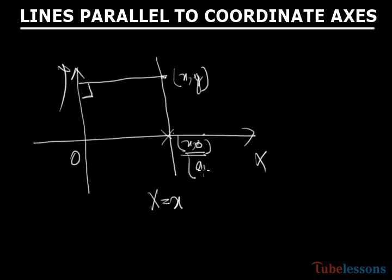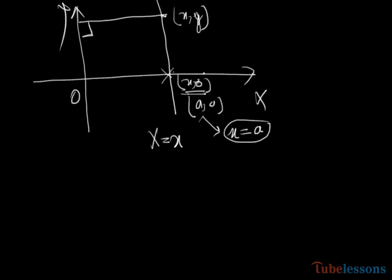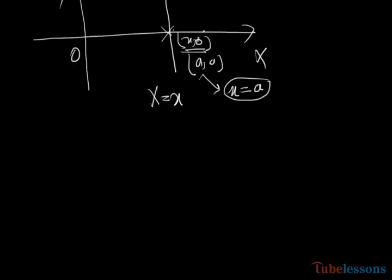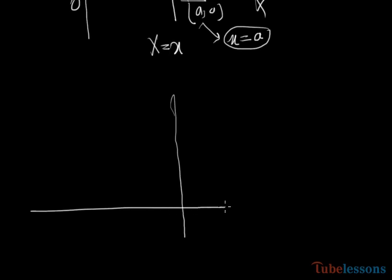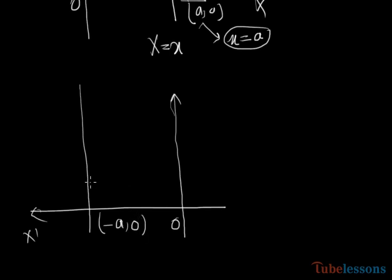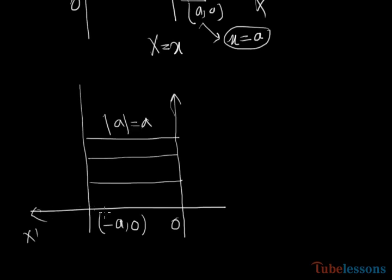The point is x₀ on the x-axis and this line is parallel to y-axis, so its equation is X equal to x. If this coordinate is in particular a comma 0, then this equation is x equals to a. If this line passes through the negative direction of the x-axis, then this point is minus a comma 0, and this distance always remains constant — that is, |a| equals the distance. As the required line is parallel to y-axis, the equation of this line is x equals to minus a.